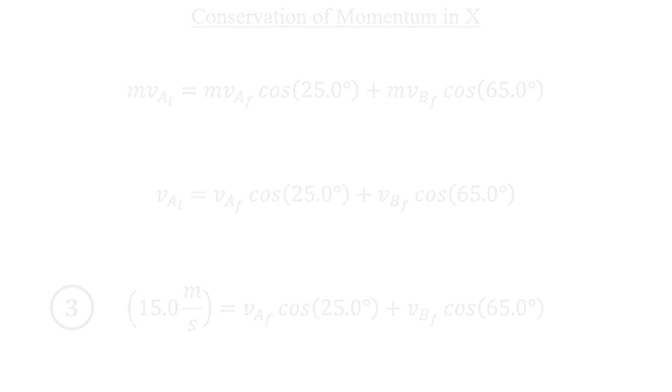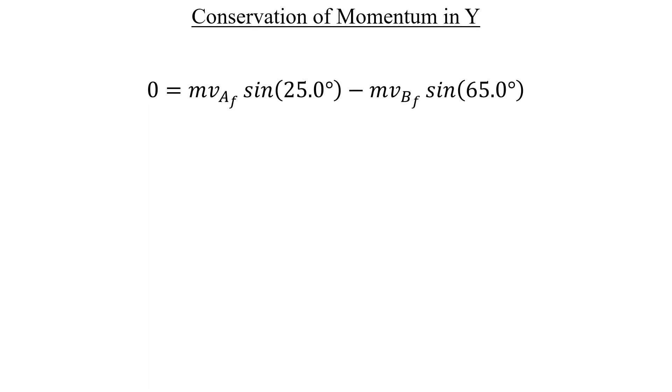In the y-direction, we get zero on the left, and there's now sine components attached to our terms on the right instead. And notice we have a negative sign here. And that's because of the way that I described 65 degrees as being pointed in our picture. If we divide out the masses, we can toss this negative second term over to the left-hand side, and then solve for one of our final velocities. I'm going to choose the final velocity of b. And once that's done, we can call our new equation number four.